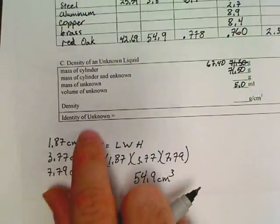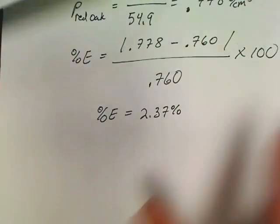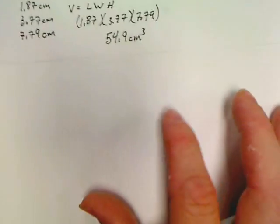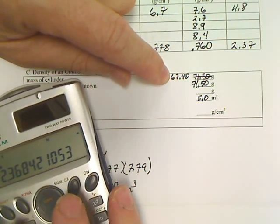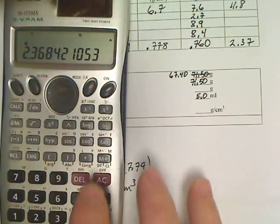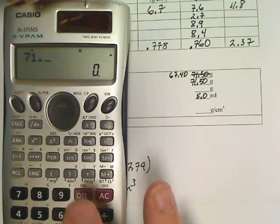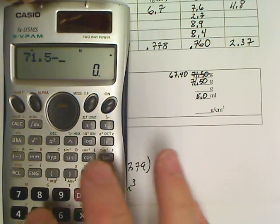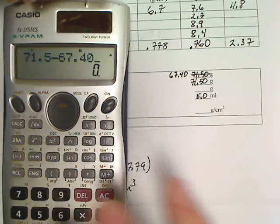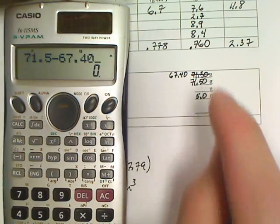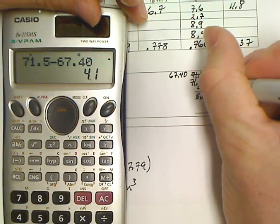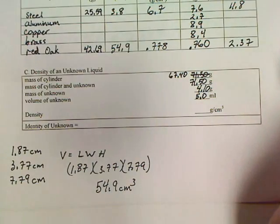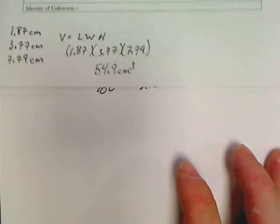You can always pause the video if you need those to finish this lab. Anyway, I want to do one more thing: density of the unknown liquid. So how are we going to do this density of an unknown liquid? Well, first off, I need to subtract my empty mass from my other mass. So for me, 71.5 minus 67.4. I promise I didn't cheat on these numbers. I've got 4.10 grams for a mass.